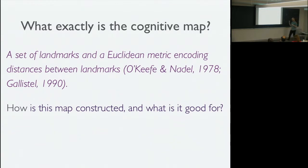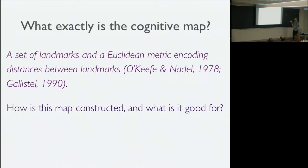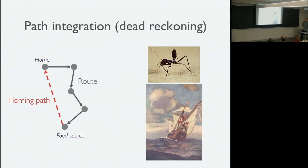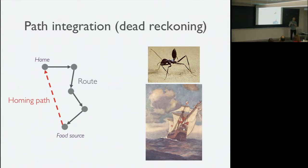So what is the cognitive map? Tolman had very suggestive experiments but was not very precise about what he meant by cognitive map. That was left to later authors — O'Keefe and Nadel in their famous book, and Gallistel's book as a canonical reference. An abstract definition is: a set of landmarks in a Euclidean spatial metric encoding distances between landmarks. We've already talked about path integration, where an animal accumulates information about its vectors to figure out its location and plan shorter paths home.